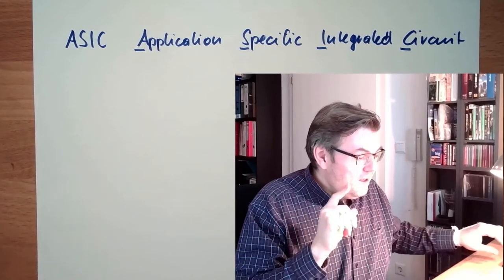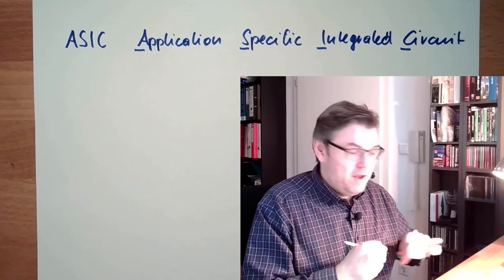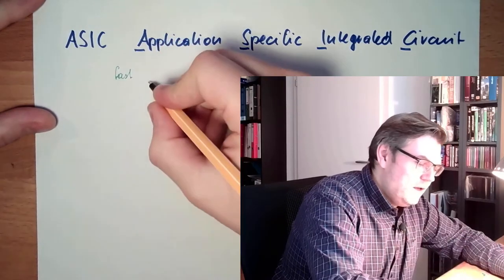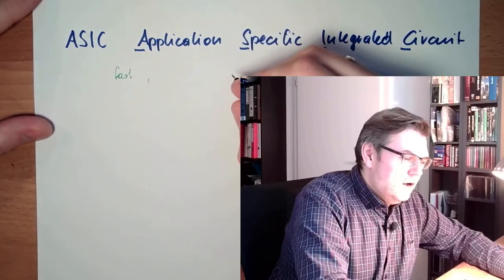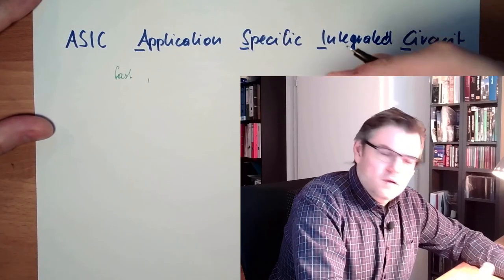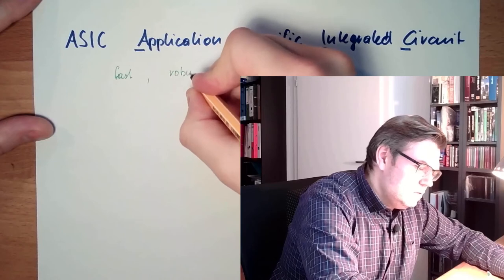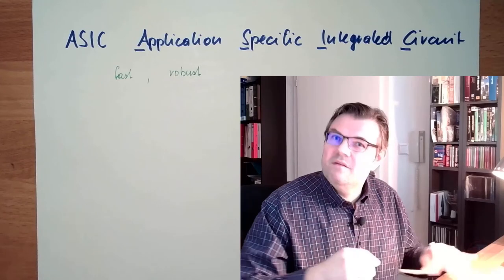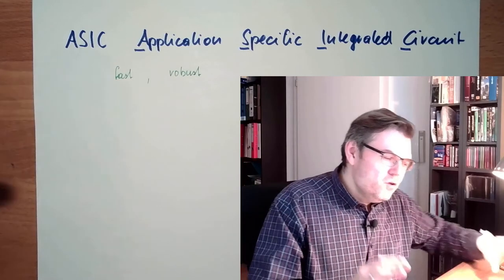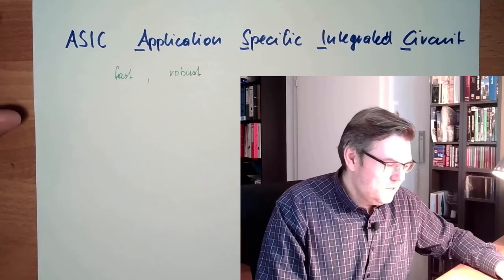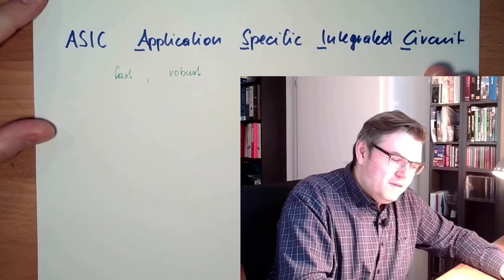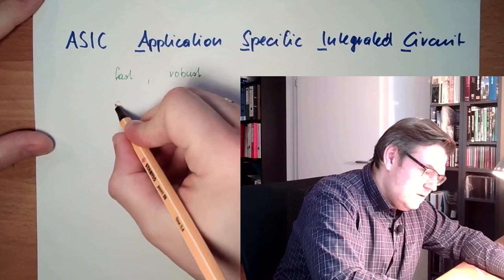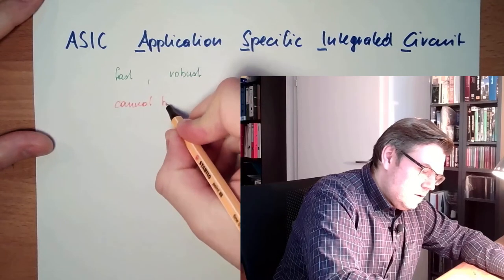Application Specific Integrated Circuits have the benefit that they are very fast and usually they cannot be disturbed, so they are robust. They're really fast, they're really robust. Even electromagnetic influence is usually not that much of an issue. The big disadvantage of these ASICs is they cannot be changed.